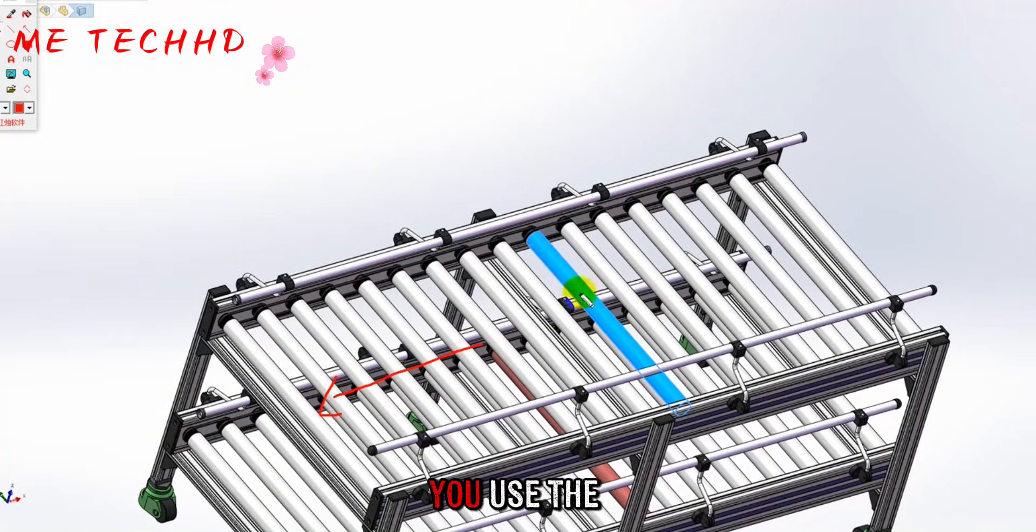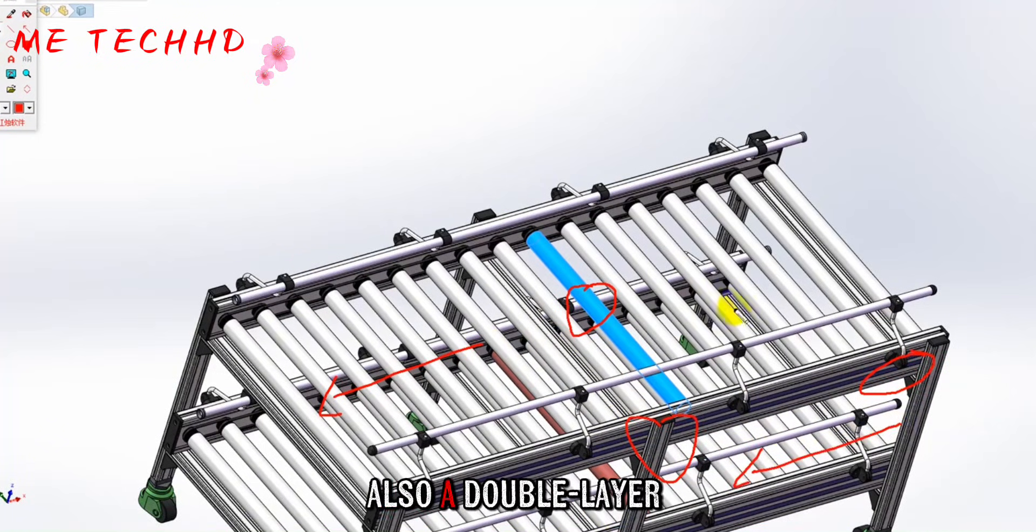If you use the electric drum, when installing, you don't need to connect power on both sides. The structure will be more compact because it is also a double-layer one here.